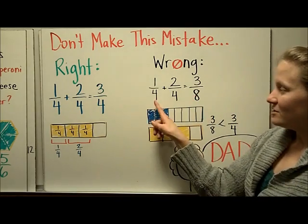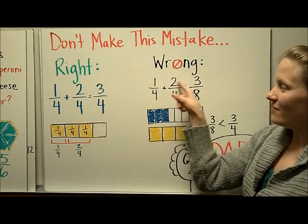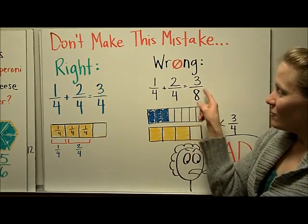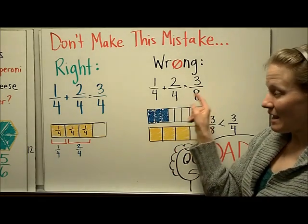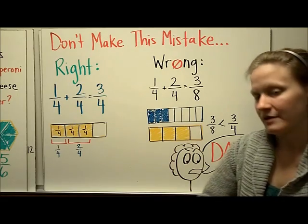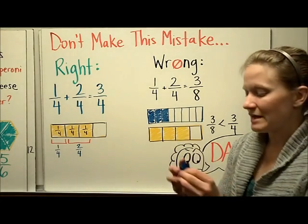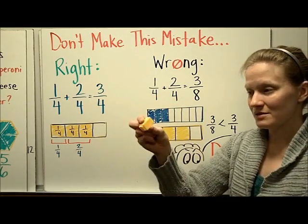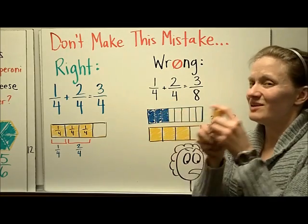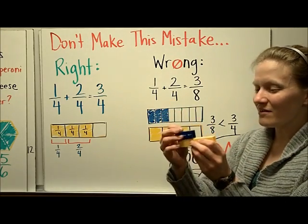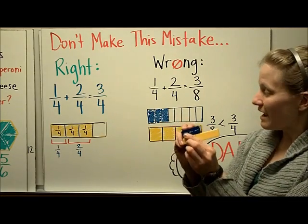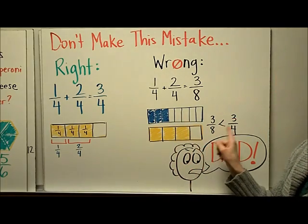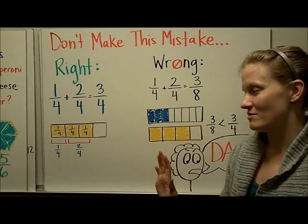Well, here's what some third graders do. The wrong way. They do 1/4 plus 2/4. They add the numerators and they add the denominators. But let's prove why this isn't a good answer. If you think that the answer to this is 3/8, here's the size of 3/8. I can show that here with my fraction tower pieces. Here's the size of a block that's 3/8. But if you put together a 1/4 piece with a 2/4 piece, you get something this size. And when you compare those, you can see that 3/8 is way smaller than 3/4. See the difference here?